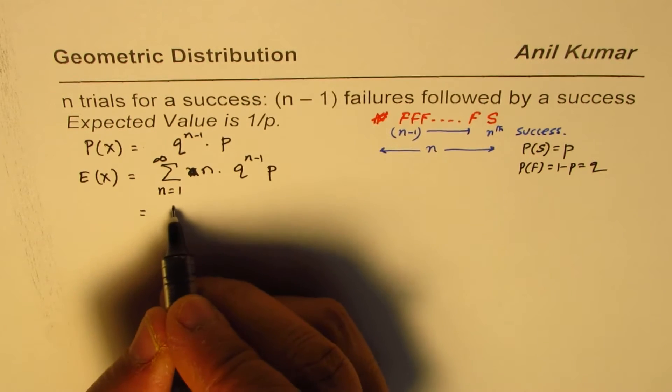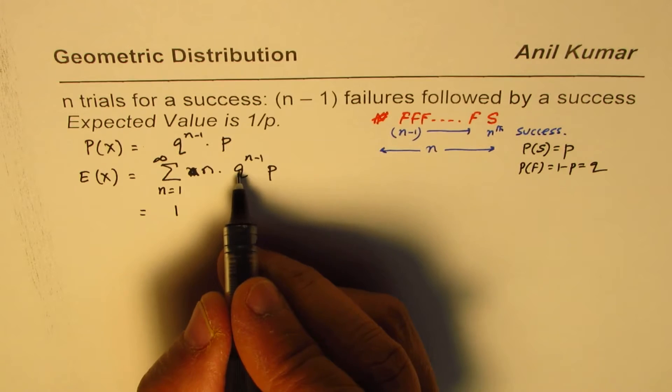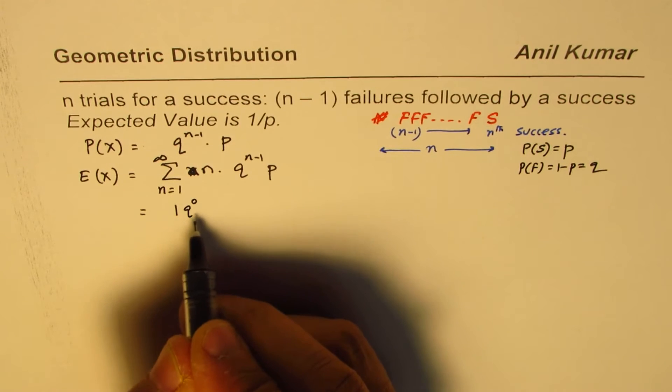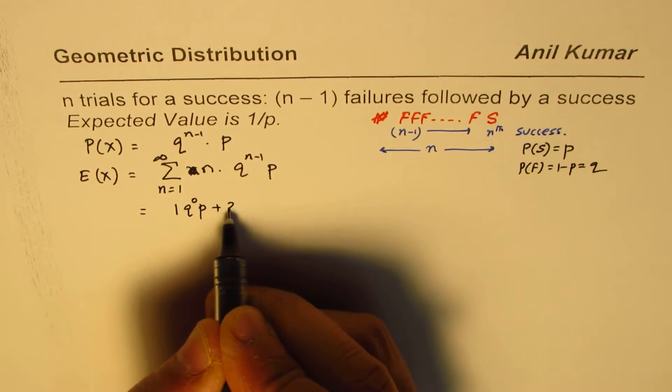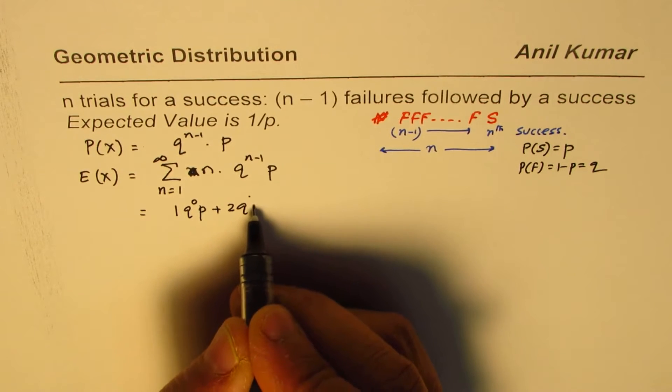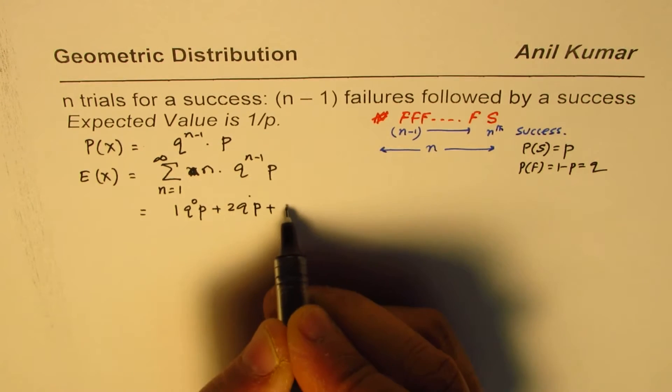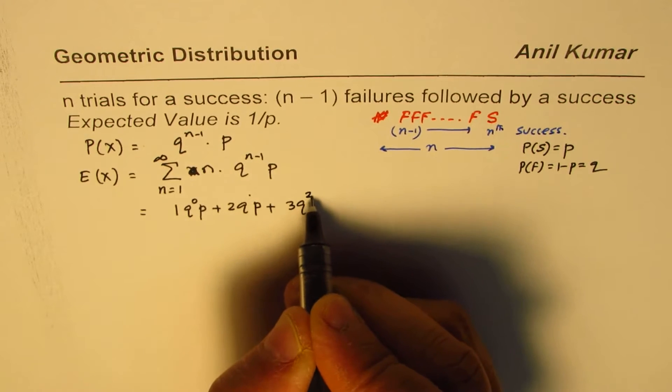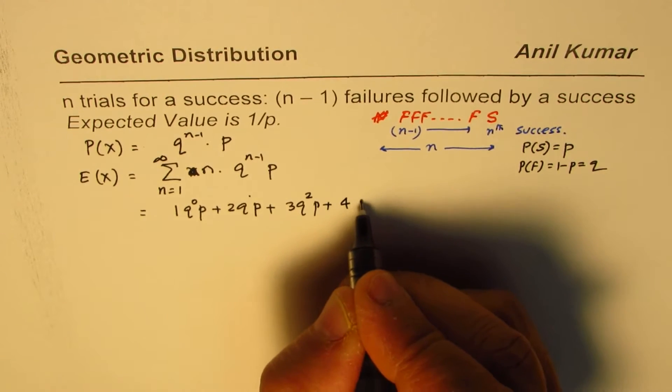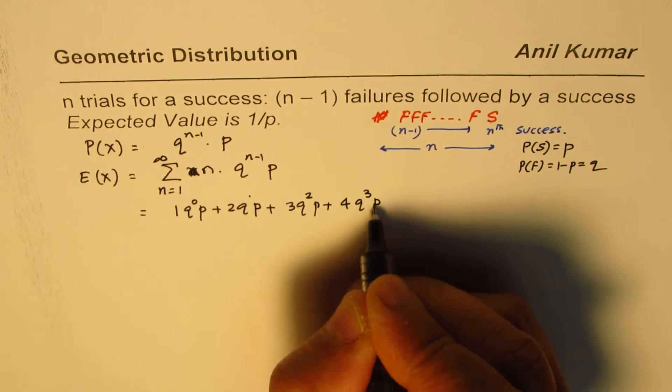If I put n as 1, I get 1 times Q to the power of 0 and then P, plus 2Q to the power of 1 P, plus 3Q square P, plus 4Q cube P, plus 5Q to the power of 4 P, and so on.